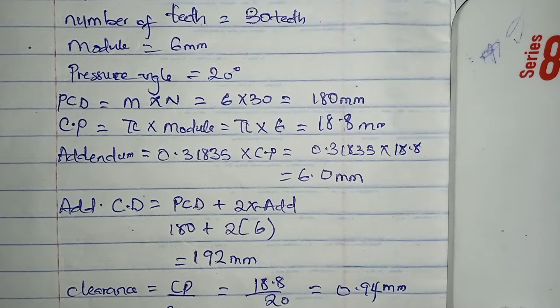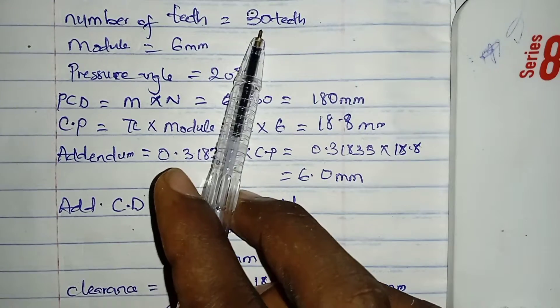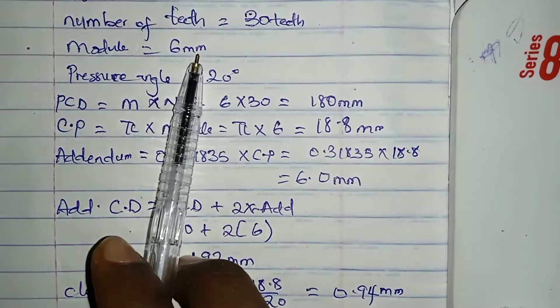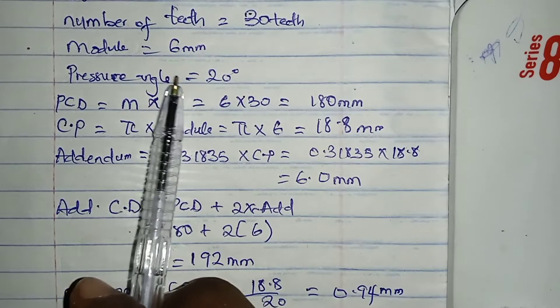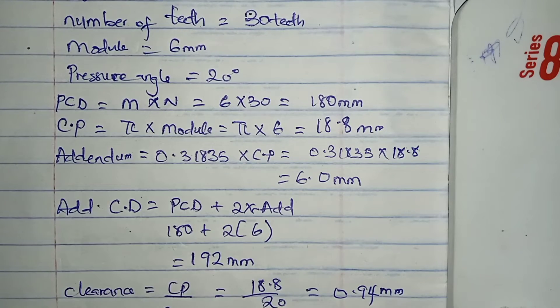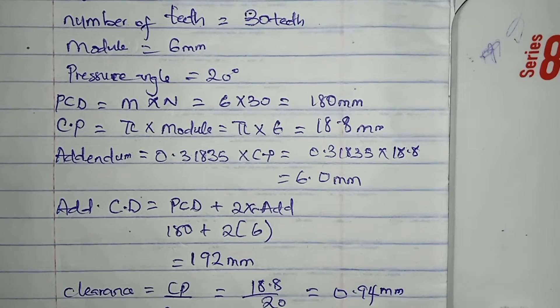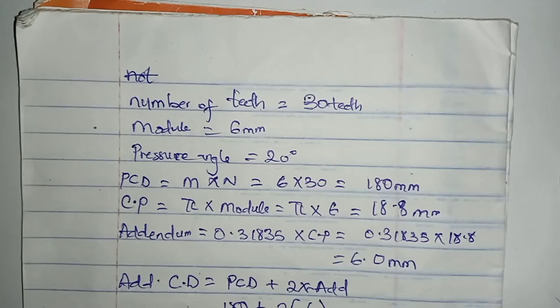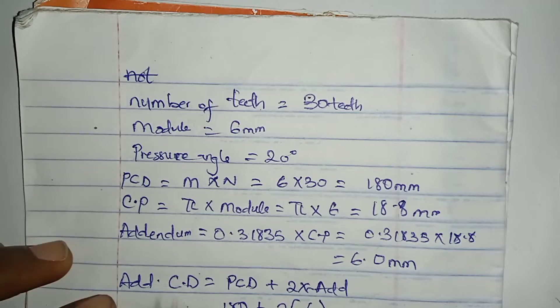Okay guys, so we are asked to draw a gear having a number of 30 teeth with a module of 6 millimeters, and we're given the pressure angle to be equal to 20 degrees. To draw this gear we will need all these parameters.